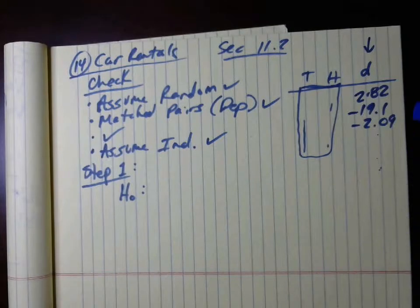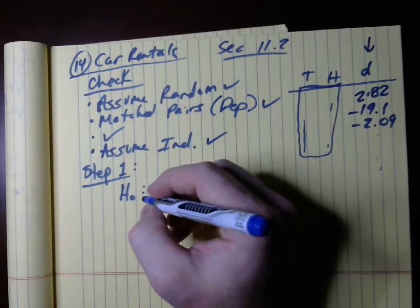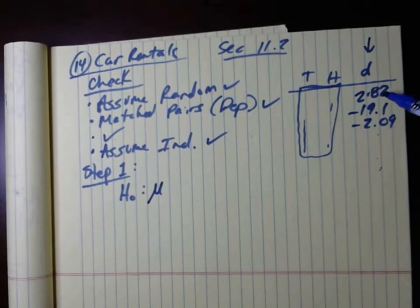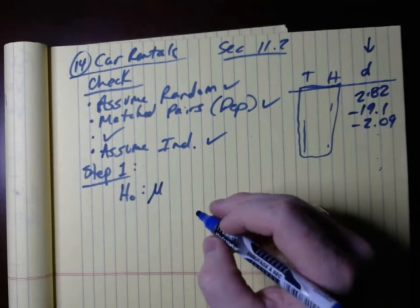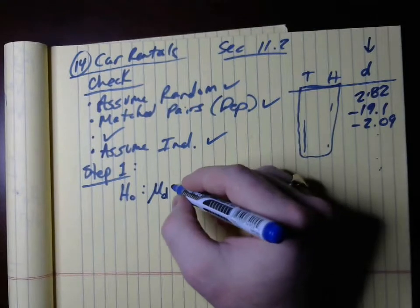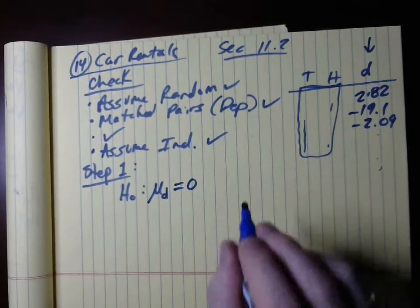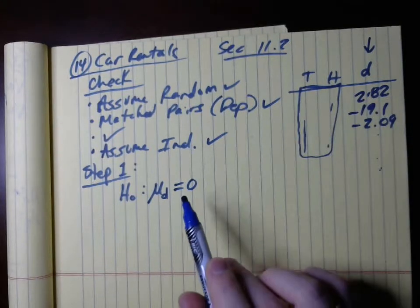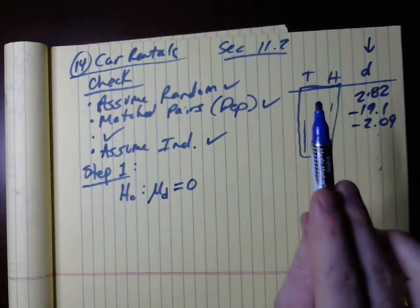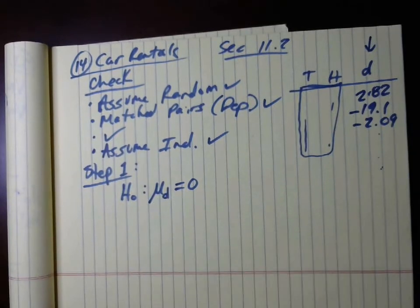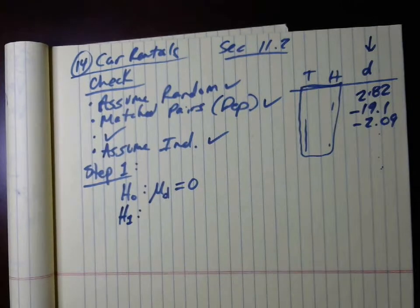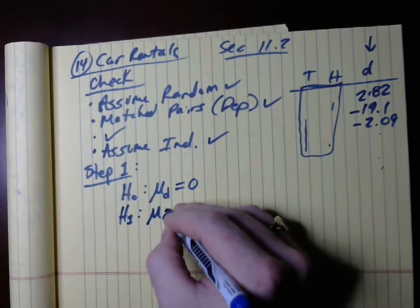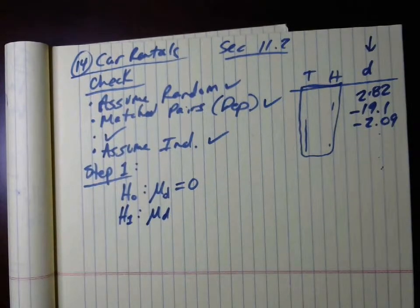It's almost identical — just slightly different variables, but it means the same exact thing. So H naught: the population mean of differences, subscript D, equals 0, which means there is no difference between them — similar to proportion, we're subtracting these two and 0 means they're the same. H alternative: mu sub D. It all depends on if it's a one-tail or two-tail test, which we can see based off the wording.